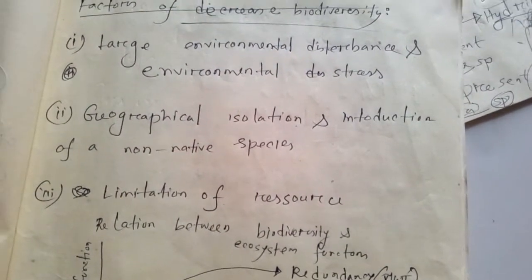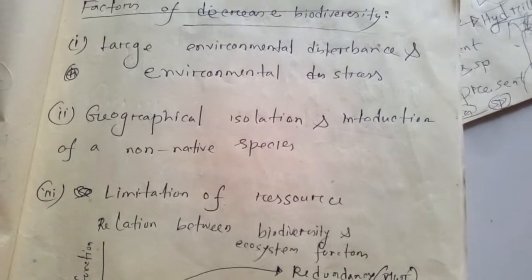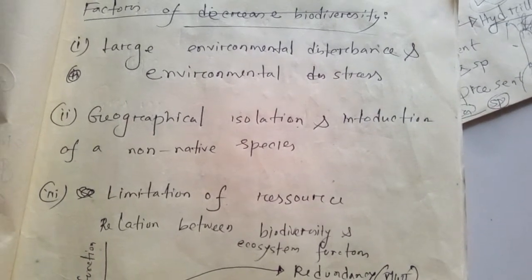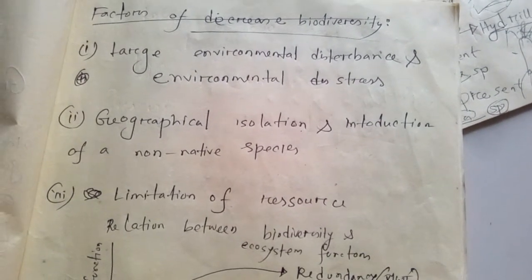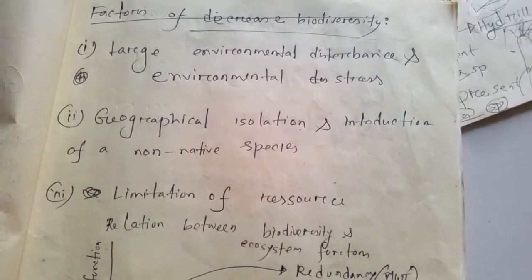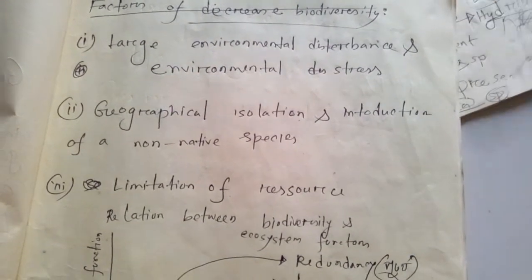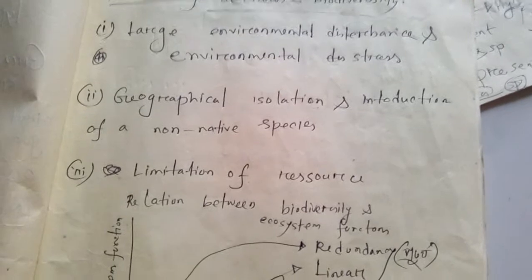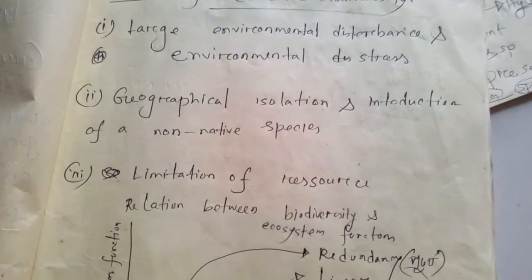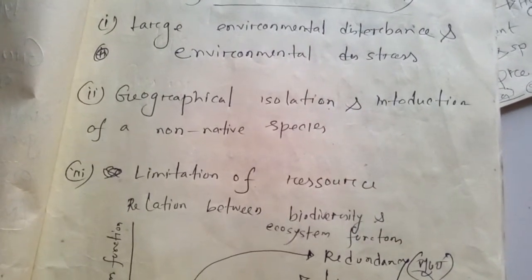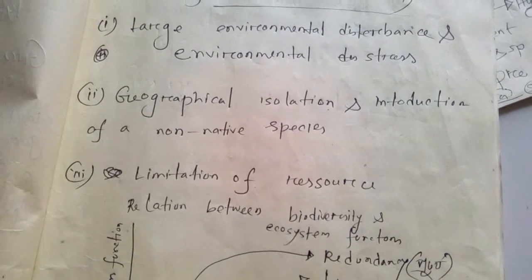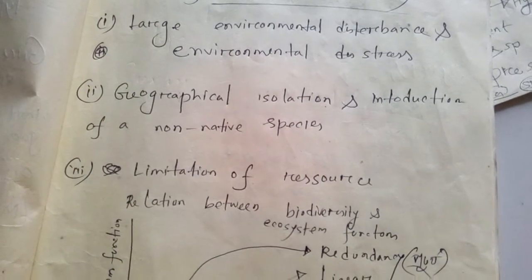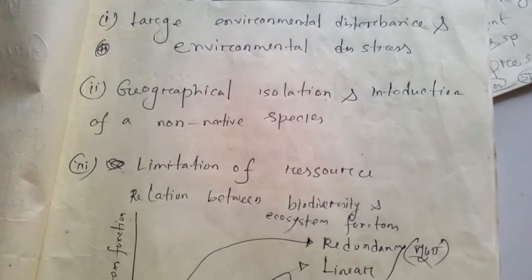Factors that Decrease Biodiversity: No. 1 — Large Environment Disturbance and Environmental Stress. No. 2 — Geographical Isolation and Introduction of Non-Native Species.